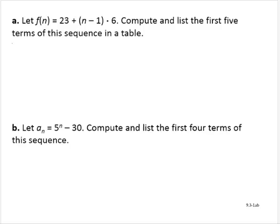All right, so f of 1. When we talk about a sequence, it always starts with n equal to 1. So f of 1 would be 23 plus 1 minus 1 times 6. So that's 23 plus 0 times 6, which is 23 plus 0, which is 23.